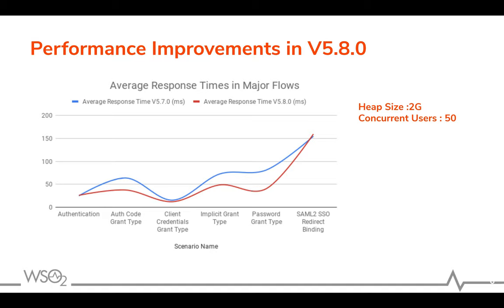This graph represents a comparison of version 5.7.0 and version 5.8.0, displaying response times taken for some major scenarios in WSO2 Identity Server. Comparatively, for most of the scenarios, a lower response time can be noticed in version 5.8.0.